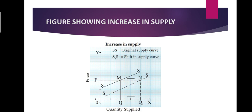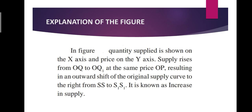Looking at the figure: when price was OP, quantity supplied was OQ, so the SS curve was at point M. Now, price remaining the same, quantity supplied increased from OQ to OQ1 because of favorable changes in other factors. So a new supply curve S1S1 is formed — this is called a shift in the supply curve. SS is the original supply curve and S1S1 is the new supply curve. Supply rises from OQ to OQ1 at the same price OP, resulting in an outward shift of the original supply curve to the right from SS to S1S1. It is known as increase in supply.